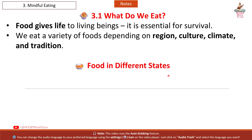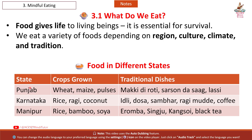Food in different states. State: Punjab. Crops grown: wheat, maize, pulses. Traditional dishes: Makki Di Roti, Sarson Da Saag, Lassi.